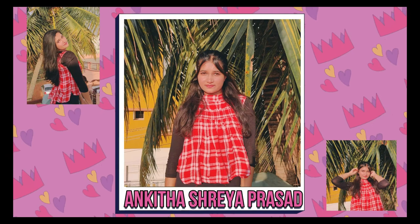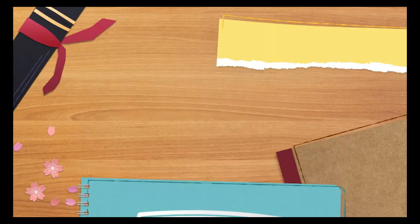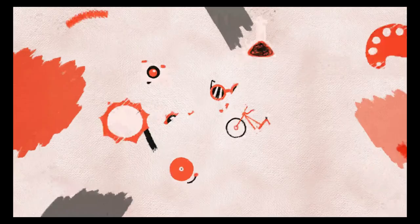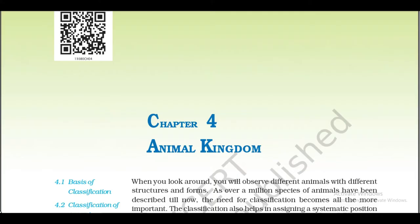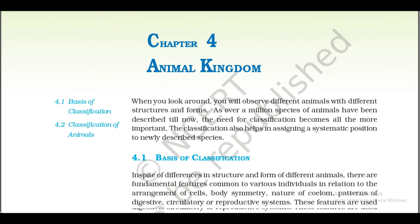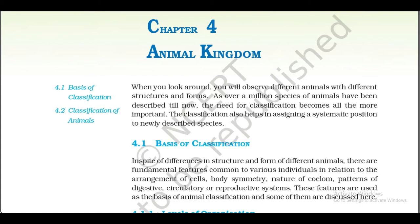Hello, Namaste. Myself Ankita Shreya Prasad, and you are listening to Along with NCERT 11th and 12th audio-video book presented by Art Skill Passion. Chapter 4: Animal Kingdom. When you look around, you will observe different animals with different structures and forms. As over a million species of animals have been described till now, the need for classification becomes all the more important. Classification also helps in assigning a systematic position to newly described species.